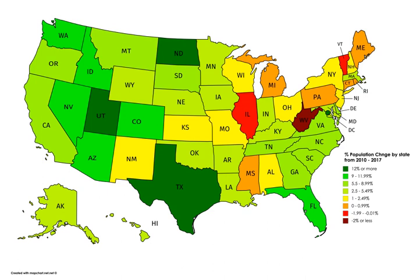The United States Census counts total persons residing in the United States including citizens, non-citizen permanent residents, and non-citizen long-term visitors. Civilian and military federal employees serving abroad and their dependents are counted in their home state.